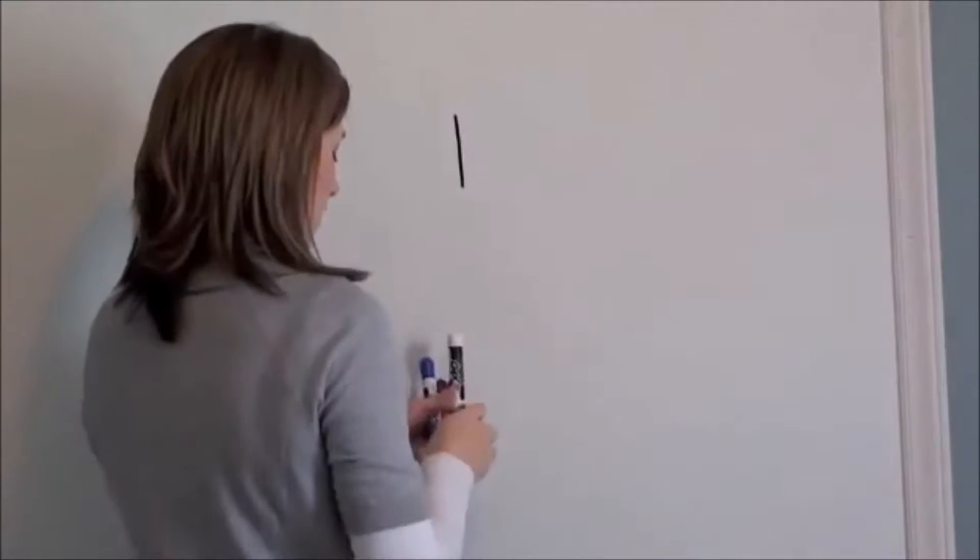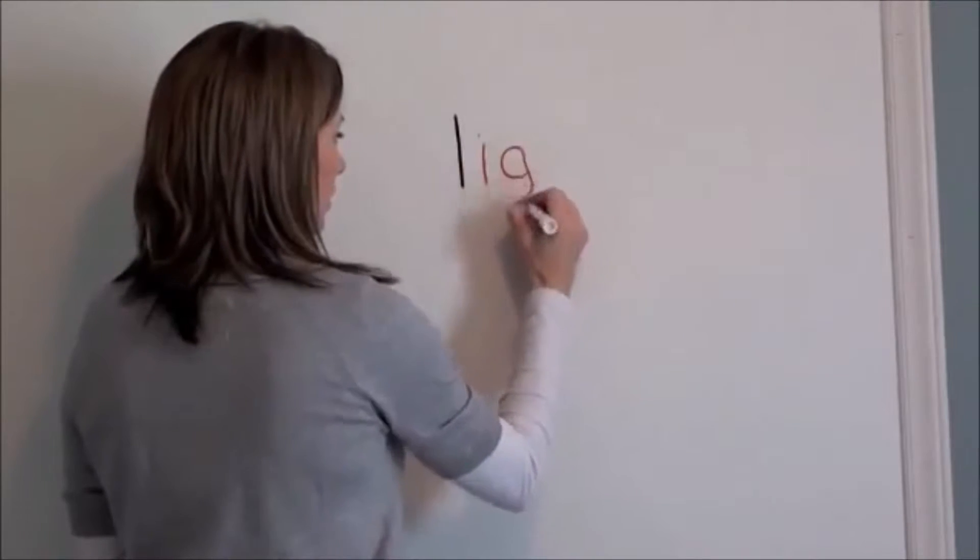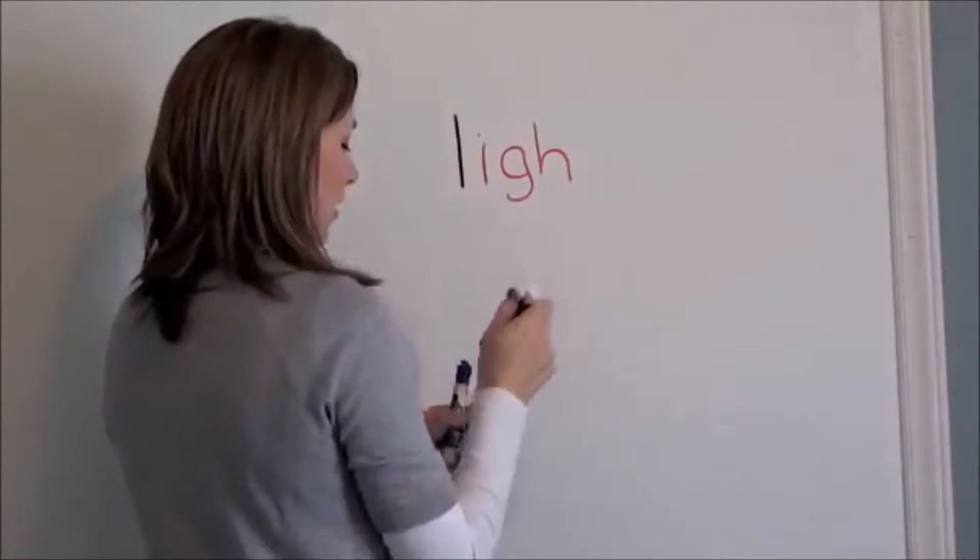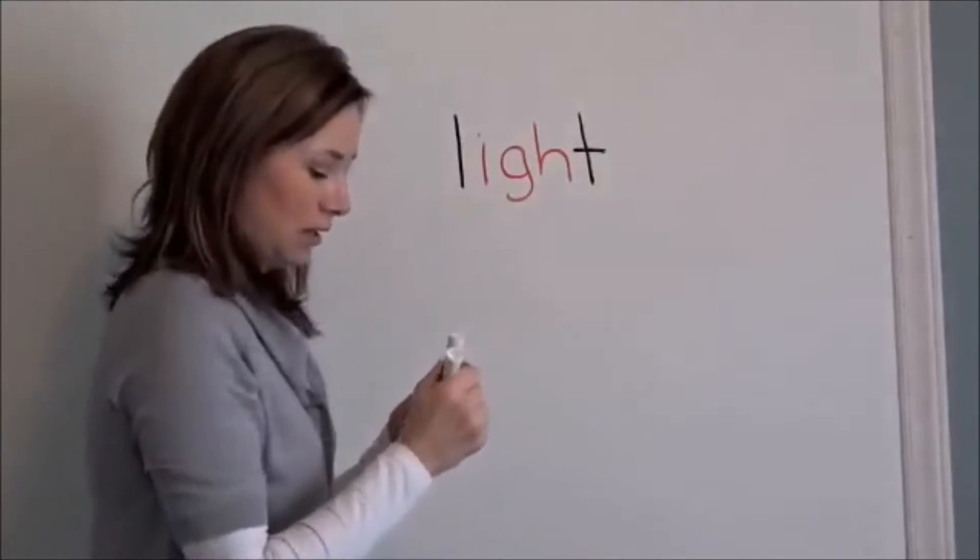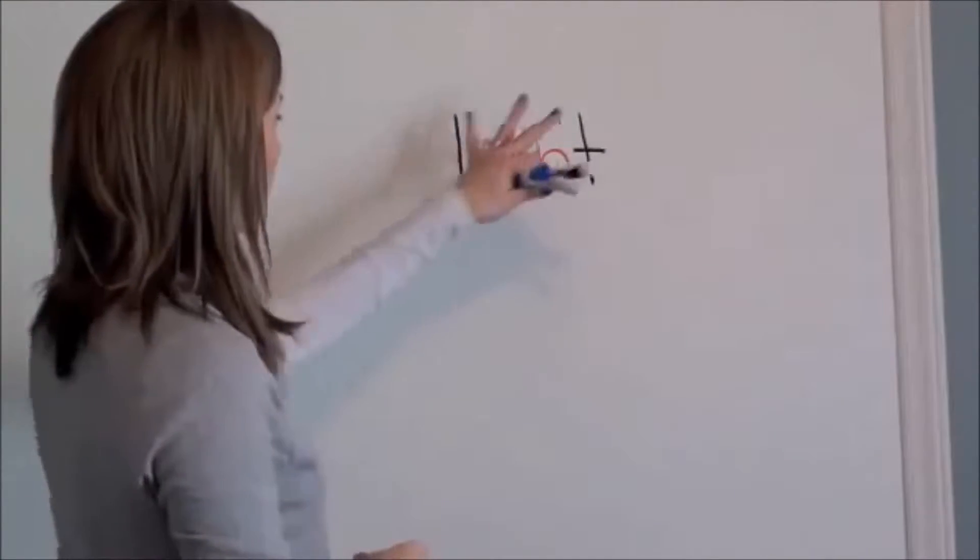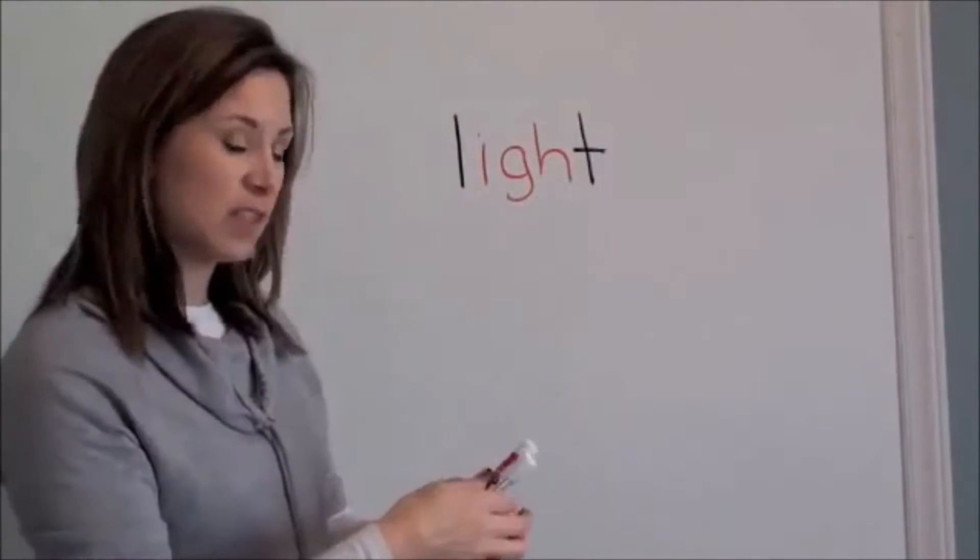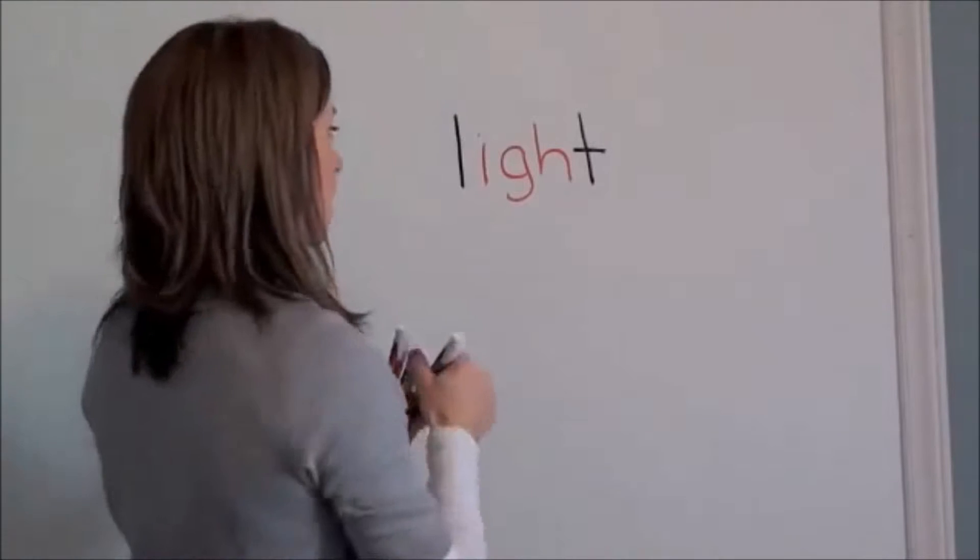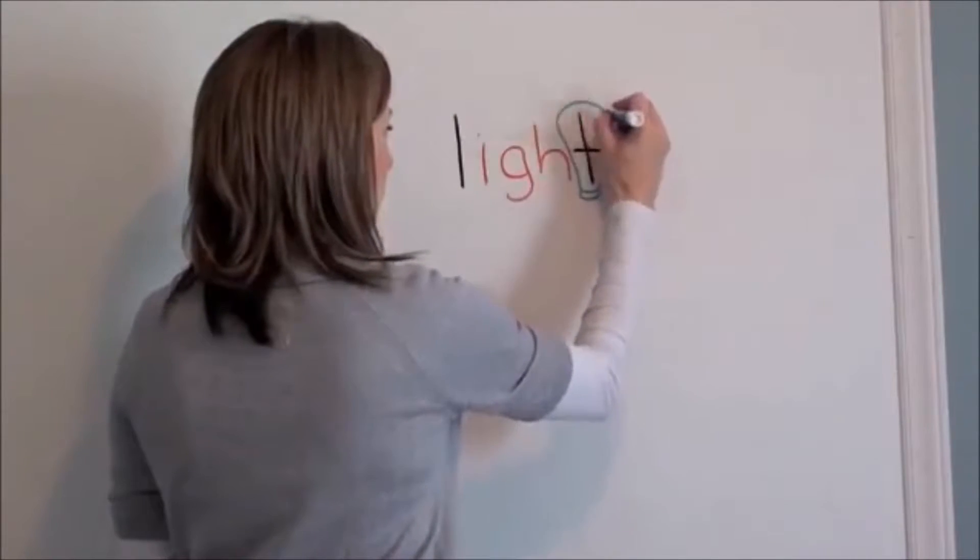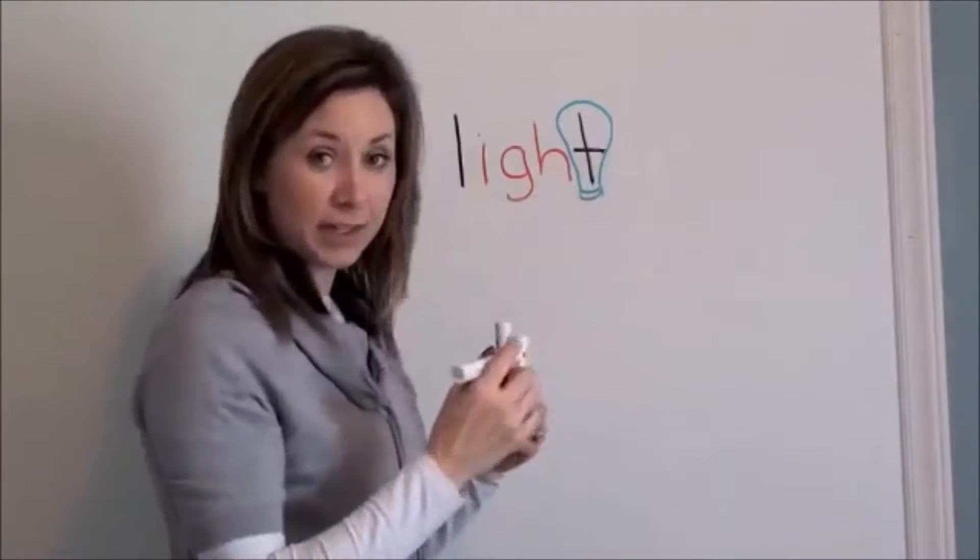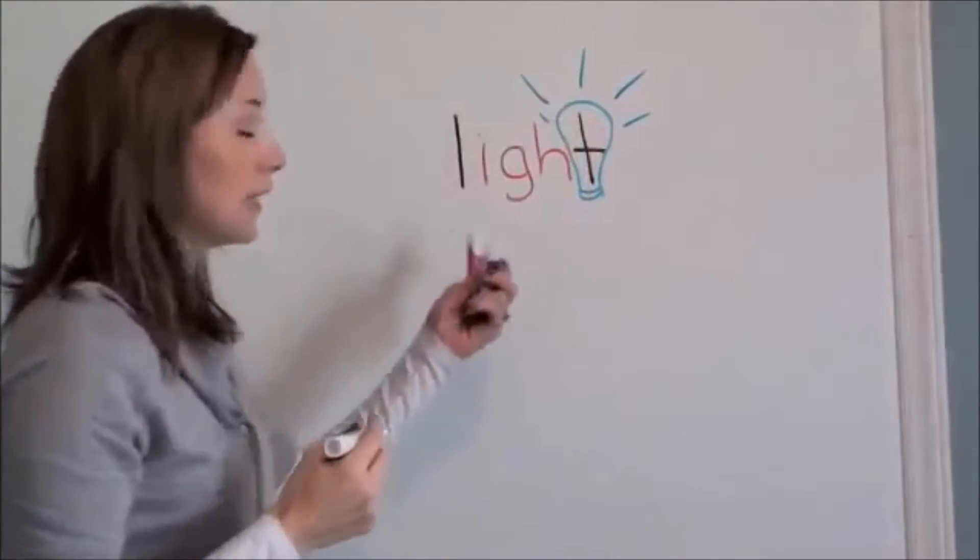Draw the L in black. I, G, and H will be in red. And again, T will be in black. Now we have to come up with a picture. So I look at this and I think of a light bulb. Well the T kind of, if you go around it, is the shape of a light bulb so that's the easiest thing I'm going to do. I'm just going to draw a light bulb right around it. And I'm not a very good drawer, but this is my attempt at a light bulb. And there you go. Light.